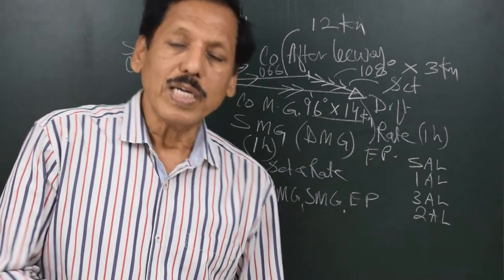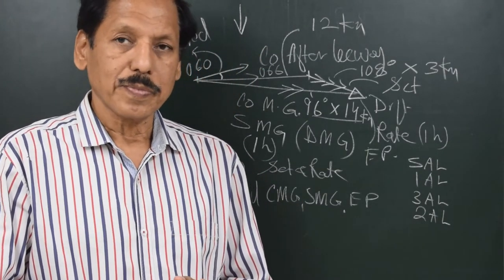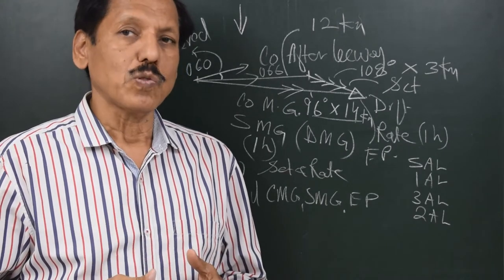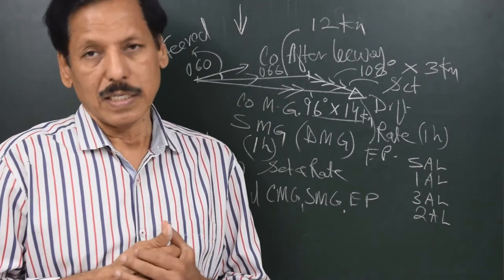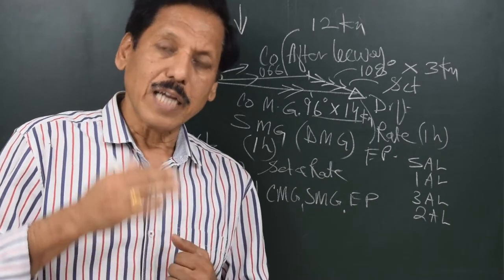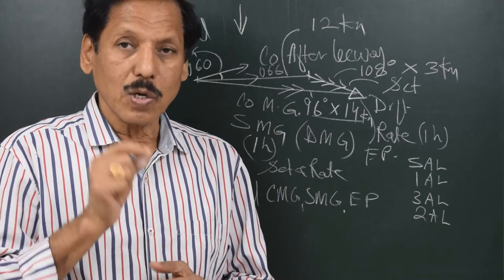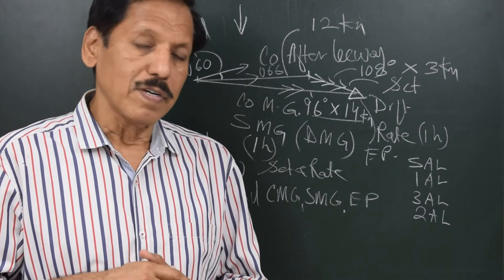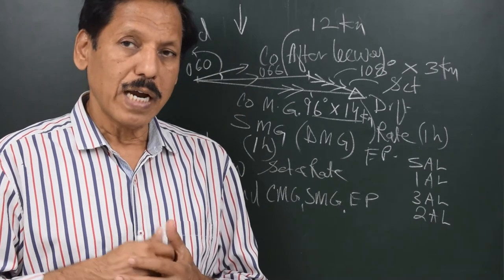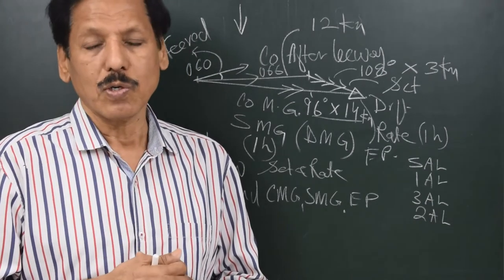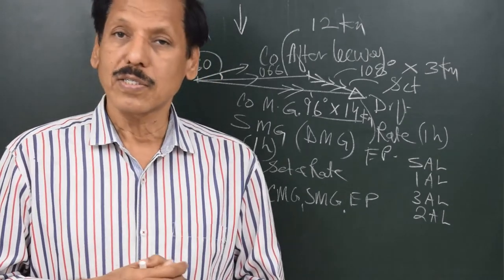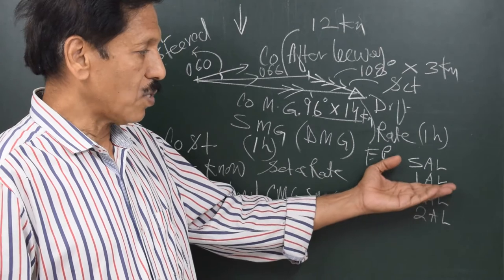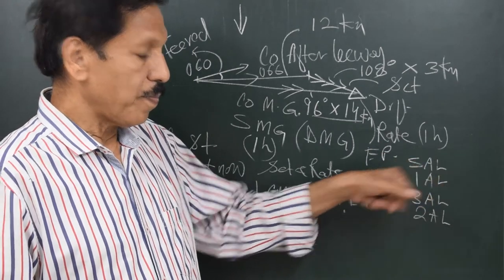Now I will deal with another situation — Situation 2 — where I have to reach a certain destination. I know my present position and I have to reach a certain destination, so one of the first lines I draw is the course to make good. That means the two-arrow line is the first line drawn. Situation 2 means the first line that is known is the two-arrow line, and we will proceed in the reverse order of Situation 1.